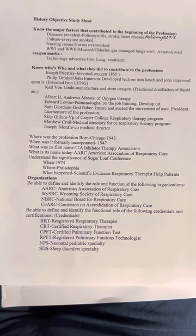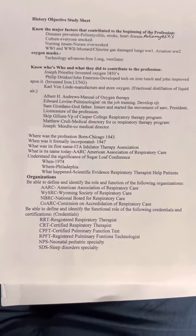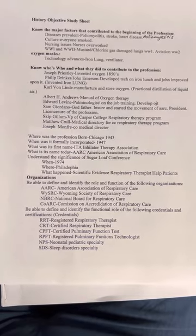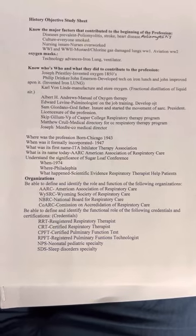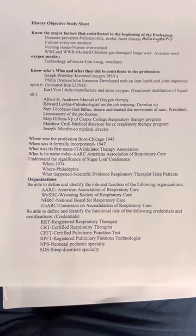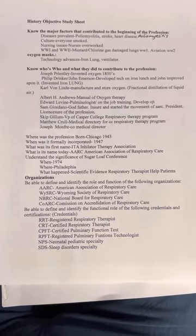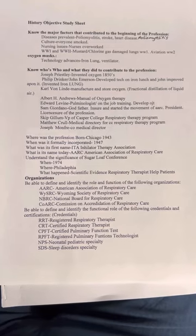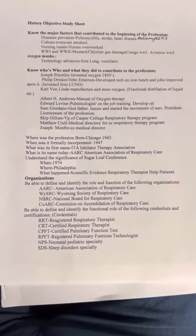Philip Drinker and John Emerson helped invent the iron lung. Philip Drinker developed the initial technology, and John Emerson improved upon it.